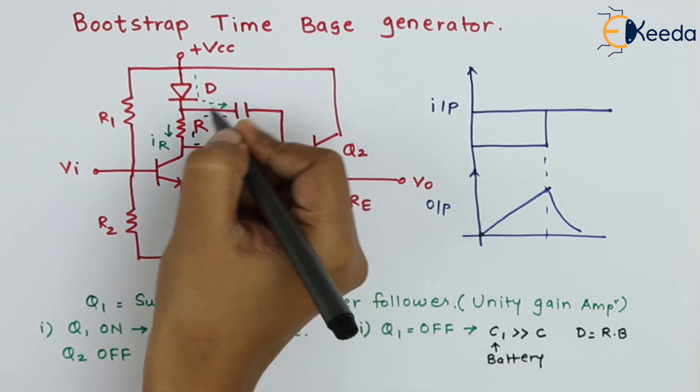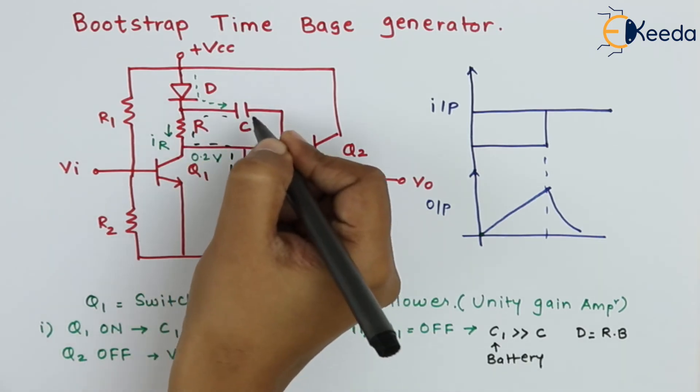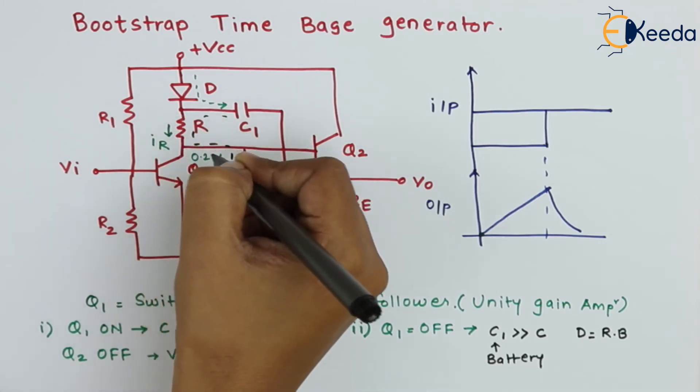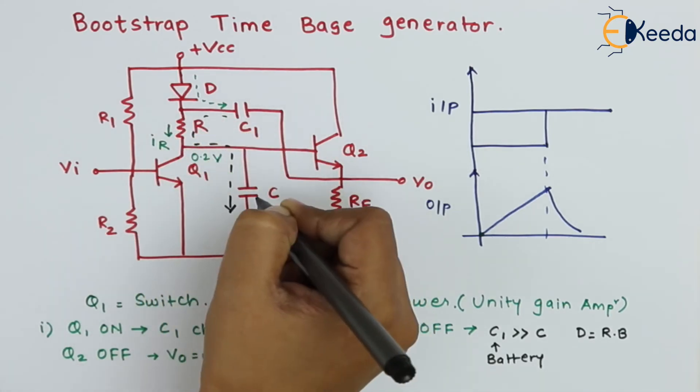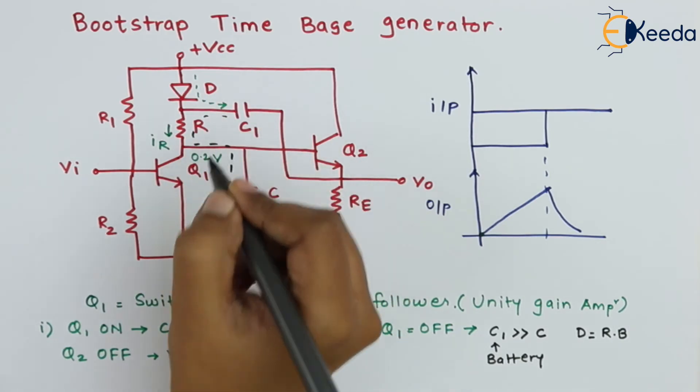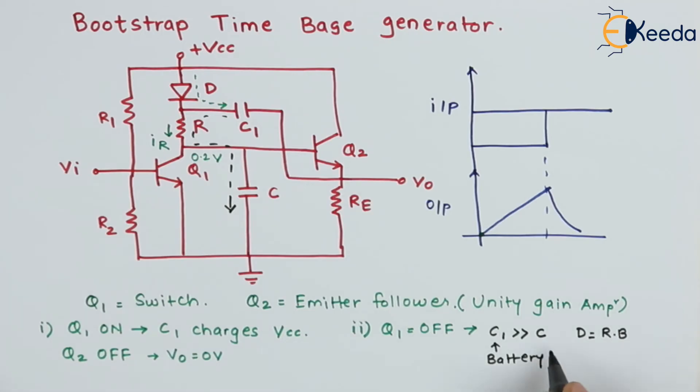So the supply voltage is provided by capacitor C1 through resistor R to capacitor C. As this acts as a battery, the value of capacitor C1 is very much greater than the value of C.